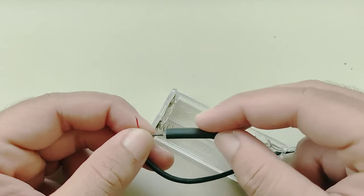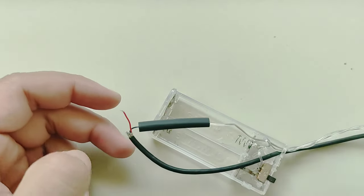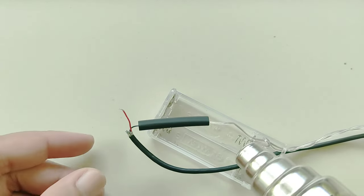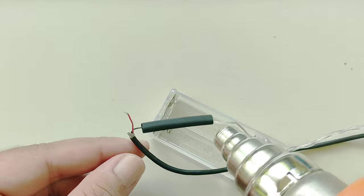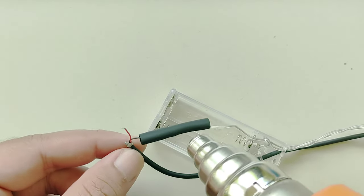And the other side is connected to the negative wire of the USB cable as shown. Make sure to cover the connections with heat shrink or electrical tape.